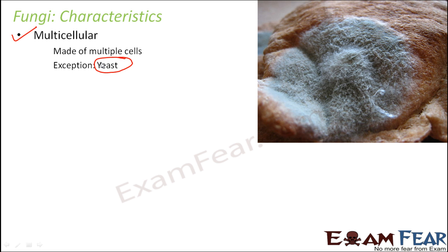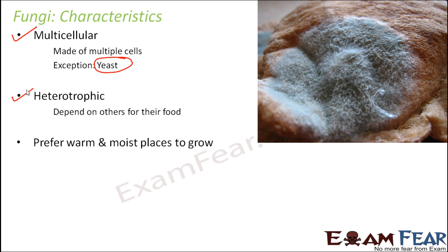They are heterotrophic — they depend on others for their food and cannot prepare their own food. They depend on dead organisms, which is why they are called saprotrophs. They prefer warm and moist places to grow. That is the reason you would not see fungi growing on bread kept inside the refrigerator, because the cold temperature doesn't favor the growth of fungi. But if you keep it outside, the temperature is warm and there is moisture in the atmosphere, making it a suitable place for fungi to grow.